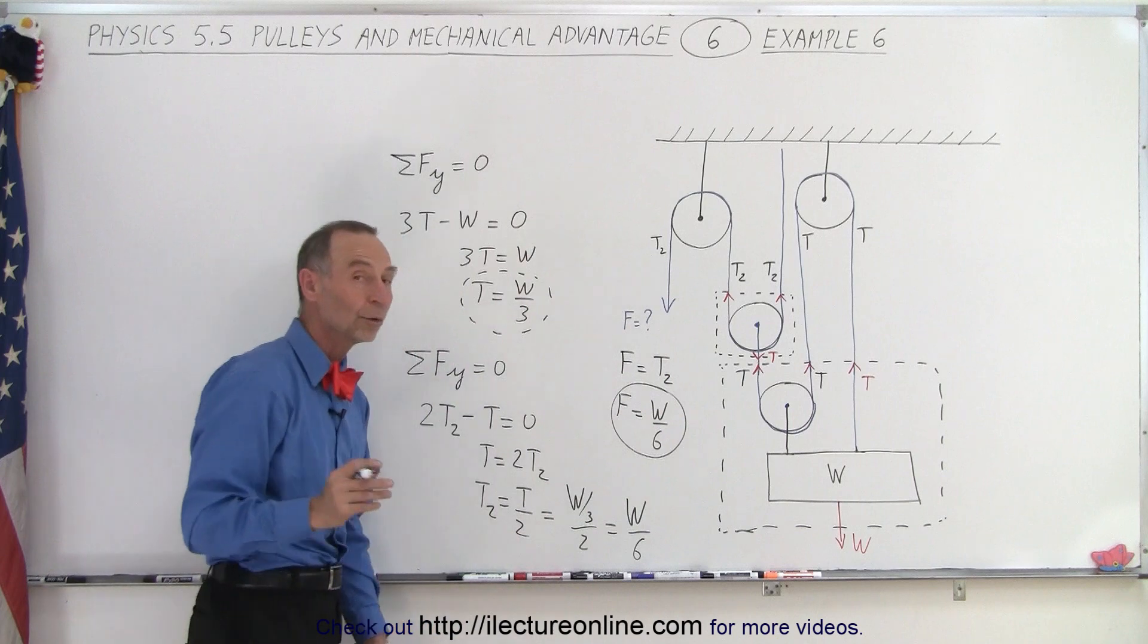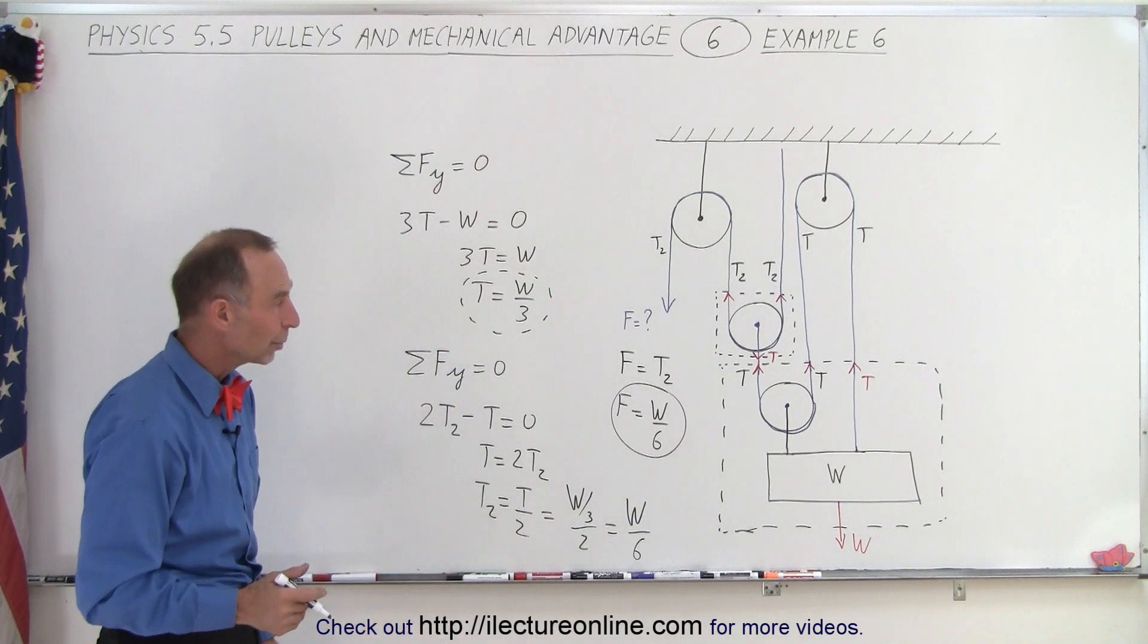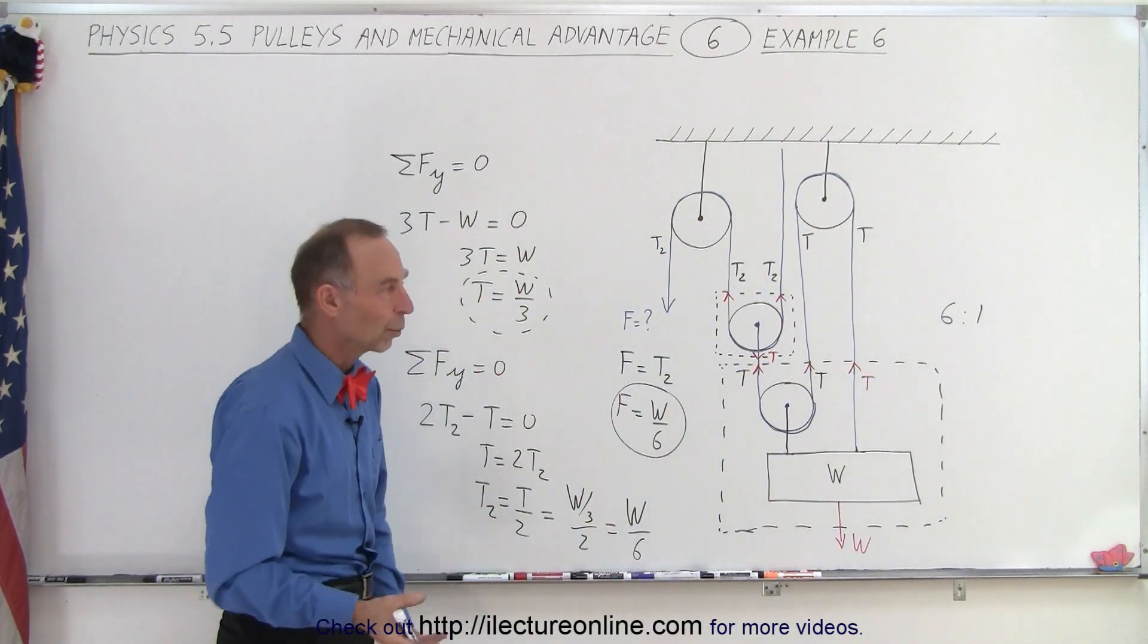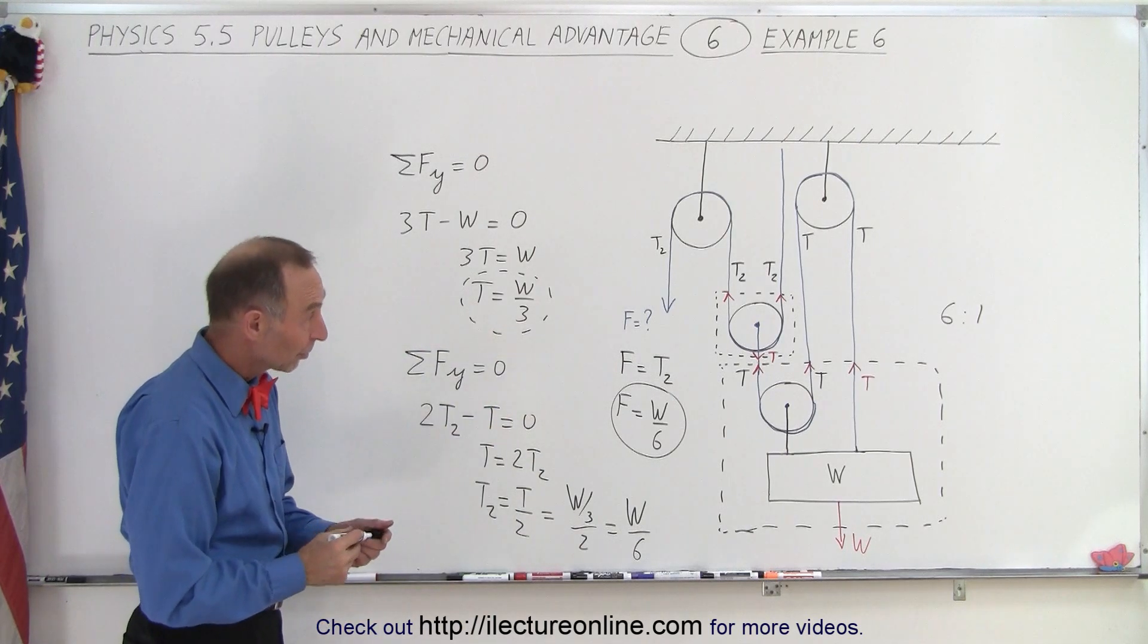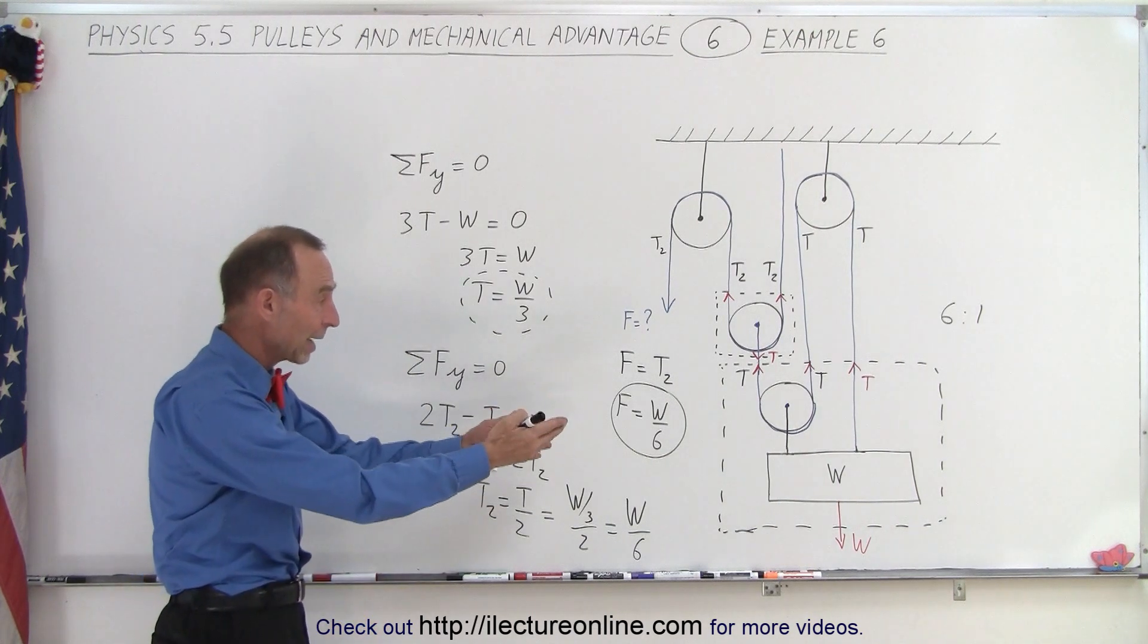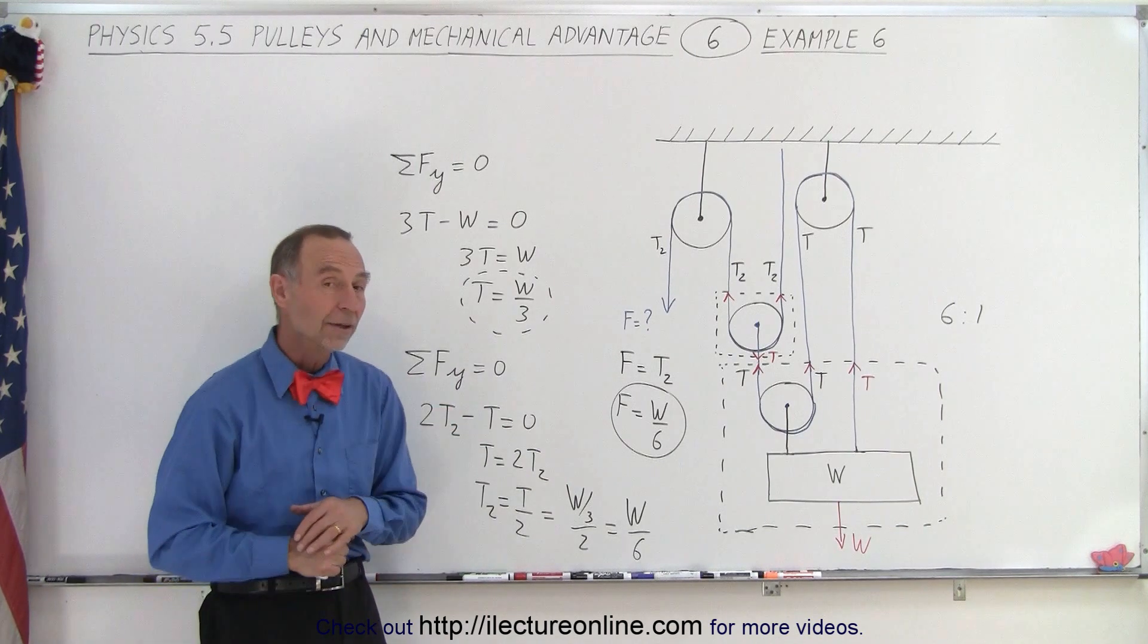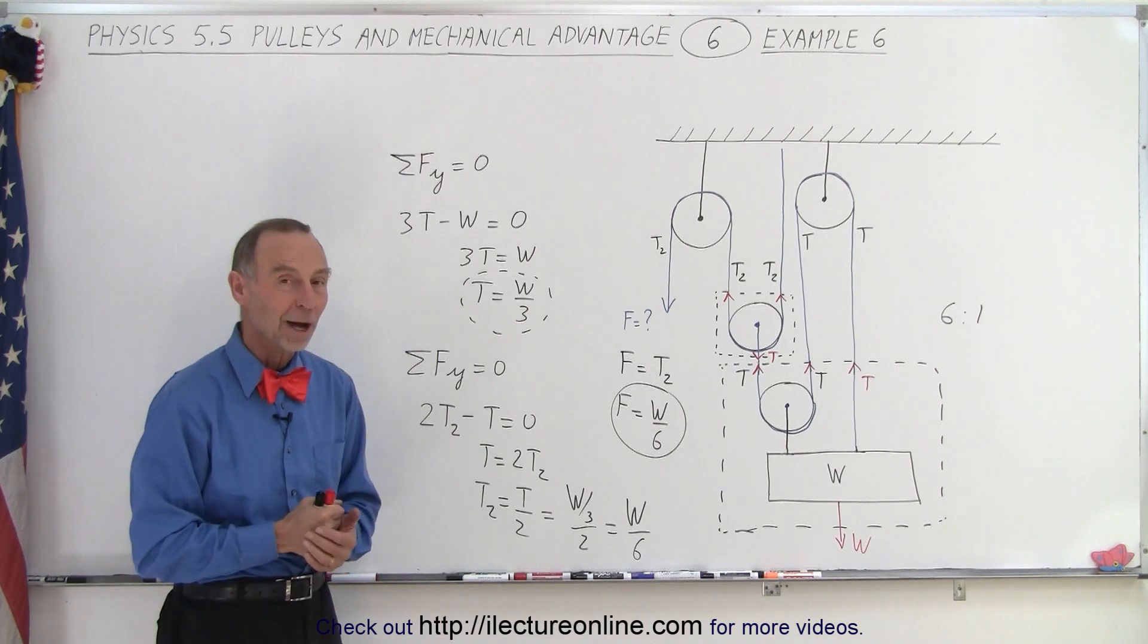So in this particular arrangement, you only need one sixth of force to lift up the object W, and that means that your mechanical advantage is six to one. In other words, you only need one sixth of force to lift up the object that has a weight of W. So that's a pretty good setup. If it weighs 60 pounds, then you only need 10 pounds to pull it, or the weight is 60 Newtons, you only need 10 Newtons to pull it. So that's a pretty good setup with a pretty good mechanical advantage, and that is how it's done.